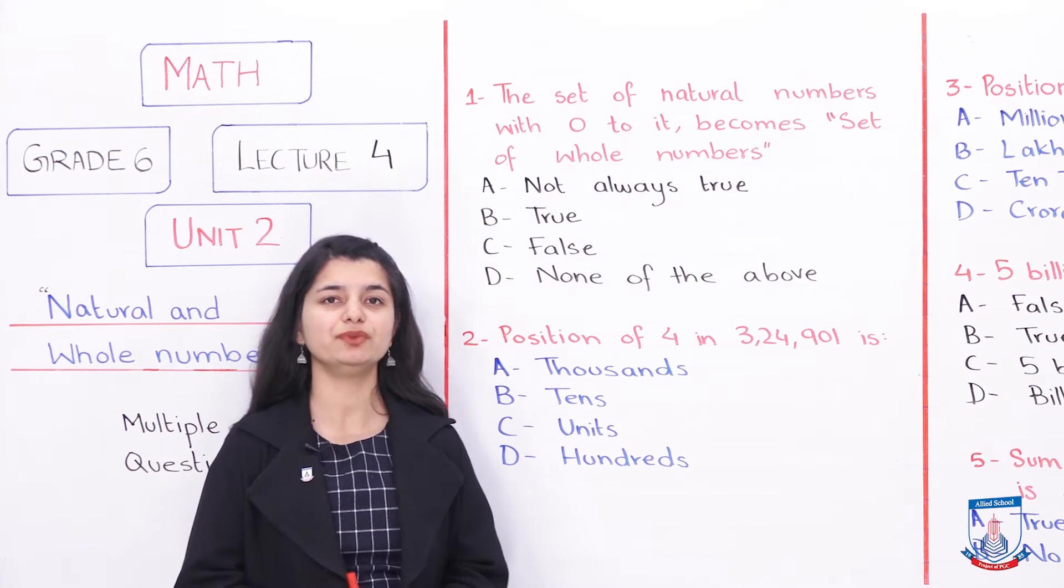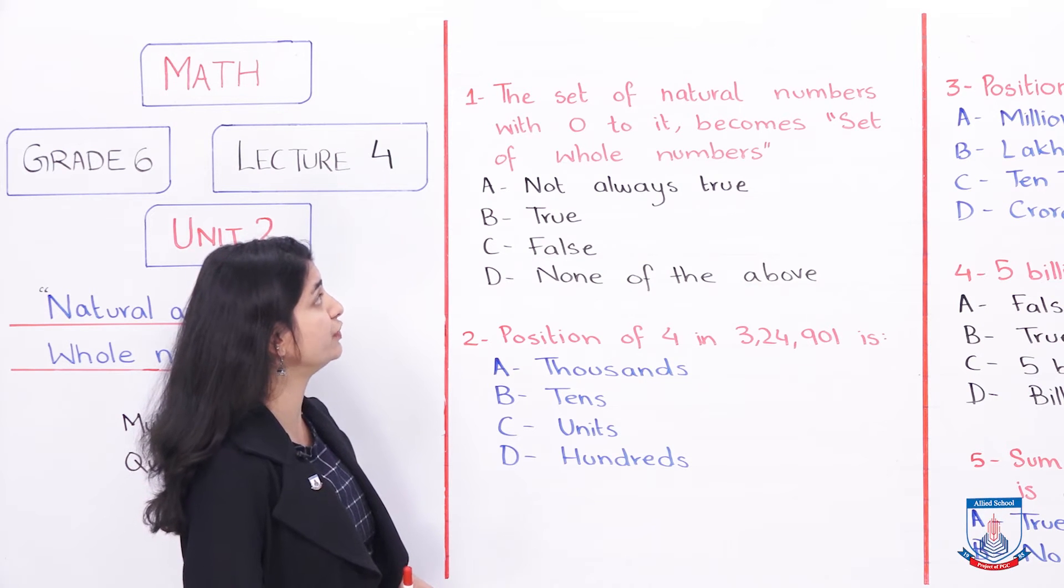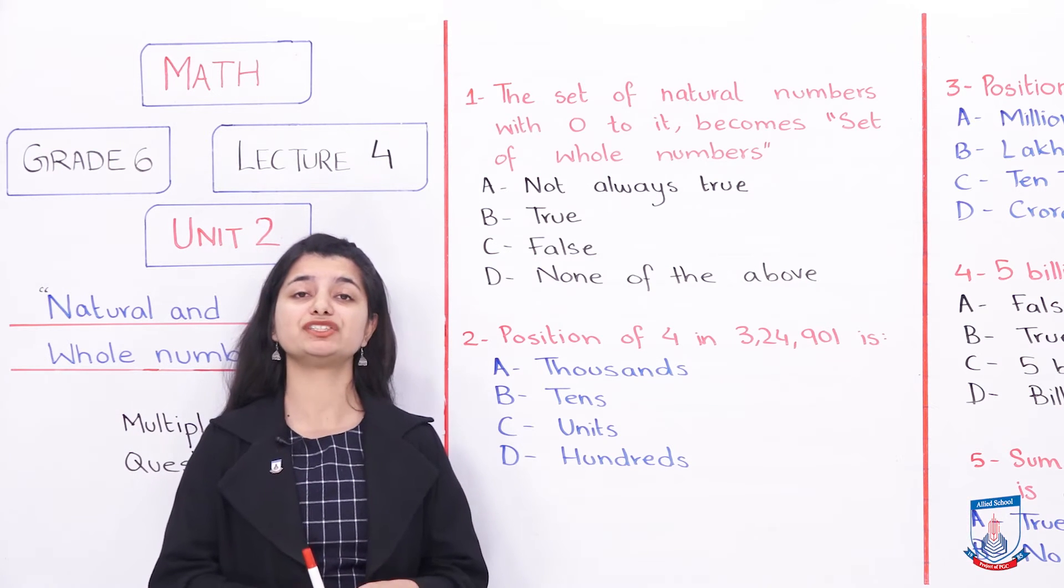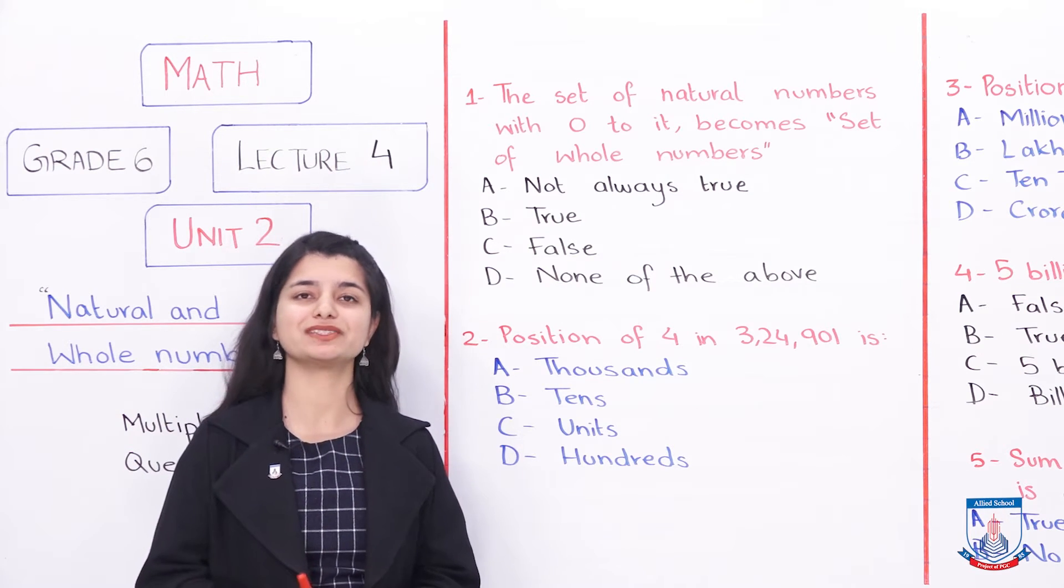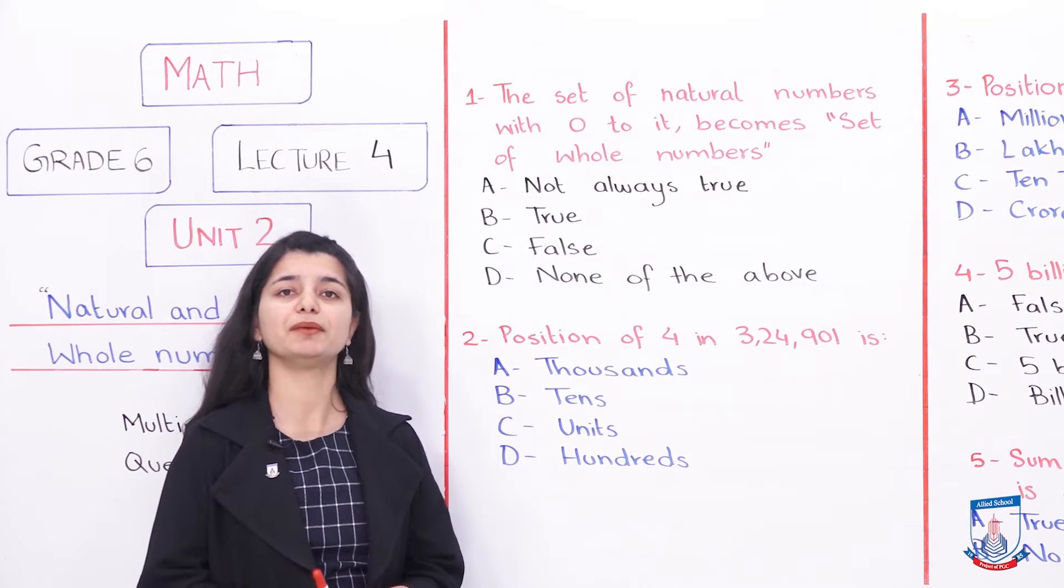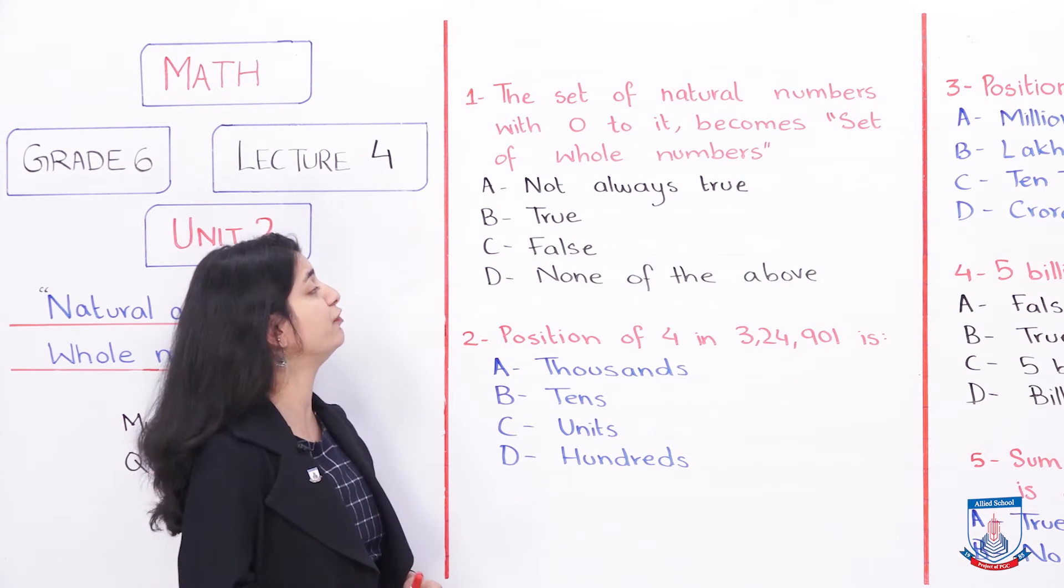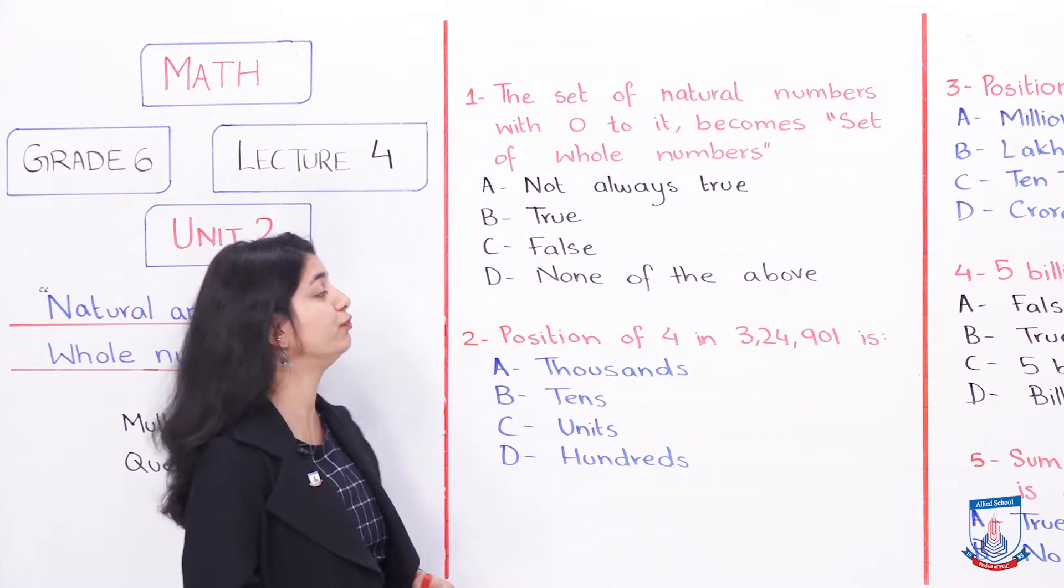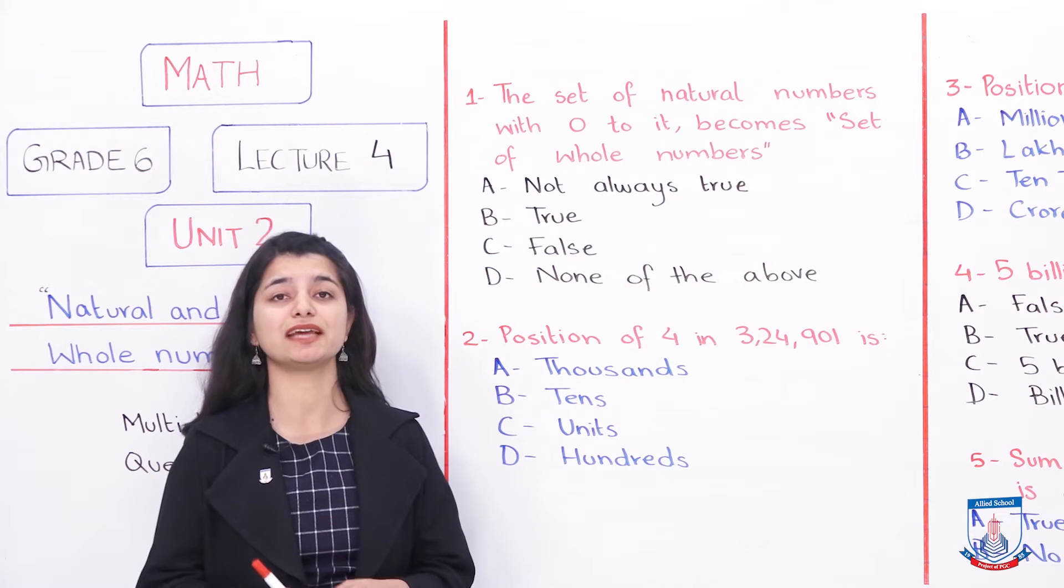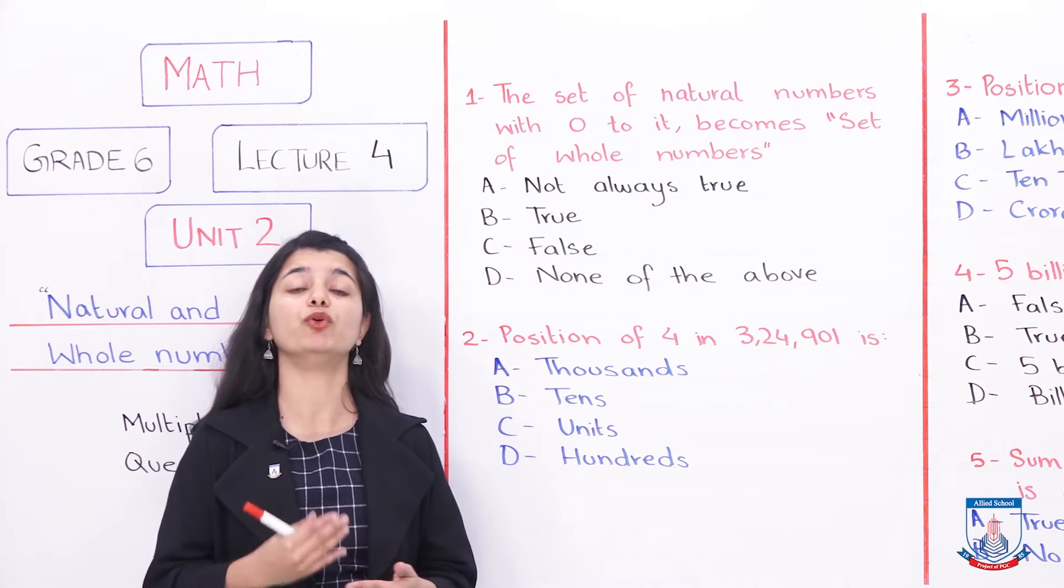The first MCQ is: the set of natural numbers with 0 added to it becomes set of whole numbers. If you add 0 to the set of natural numbers, then it becomes a whole numbers set. The options are A: not always true, B: true, C: false, and D: none of the above. Let's see what happens when we add 0 to our natural numbers set. Does it become a whole number set?